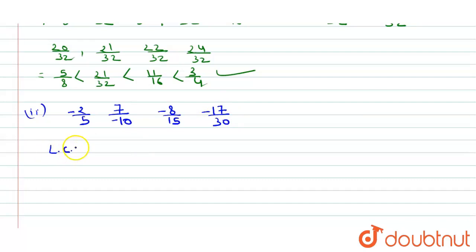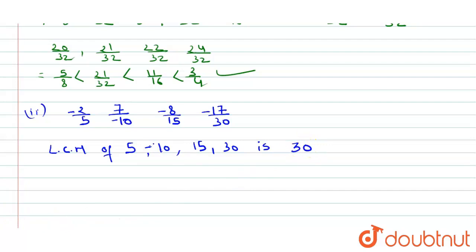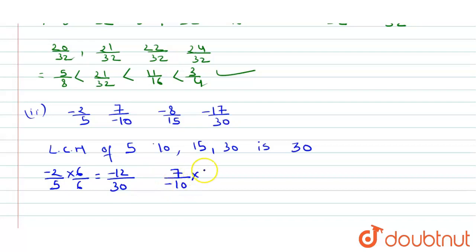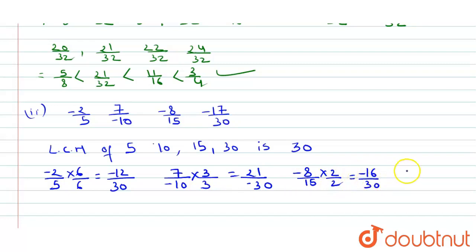The LCM of 5, 10, 15, and 30 is 30. Converting: -2/5 × 6/6 = -12/30. 7/(-10) × 3/3 = 21/(-30). -8/15 × 2/2 = -16/30. -17/30 × 1/1 = -17/30.